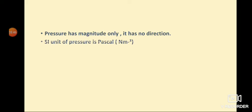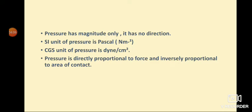Pressure has magnitude only and no direction, so it is a scalar quantity. Although it depends on force, it is not a vector quantity. The SI unit of pressure is the pascal, that is newton per meter squared, and the CGS unit of pressure is dyne per centimeter squared.